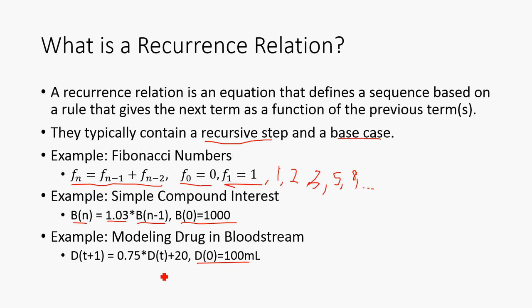And then every hour, we give him 20 milliliters of the drug. And then the body consumes a quarter of it. So that means 75% remain. So the next term in the sequence is going to be 75% of whatever is currently there, plus 20 milliliters since we're adding that in. That will be the next amount of drug in the person's bloodstream.